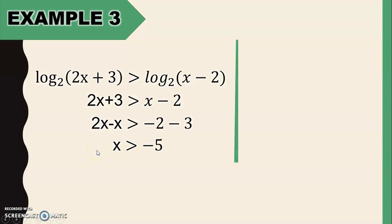Remember that it is only possible to take the logarithm of a positive number. So the argument of the logarithm, 2x plus 3, must be greater than 0. And x minus 2 should be greater than 0.